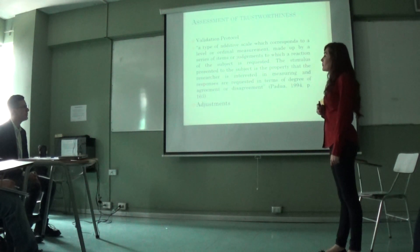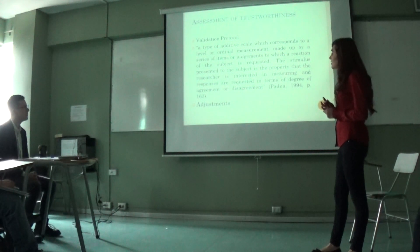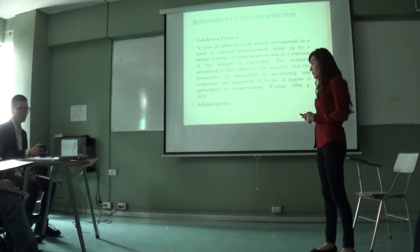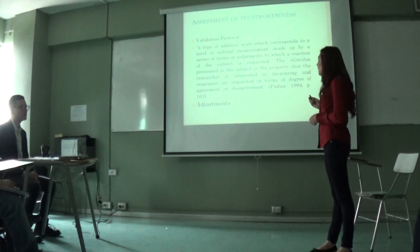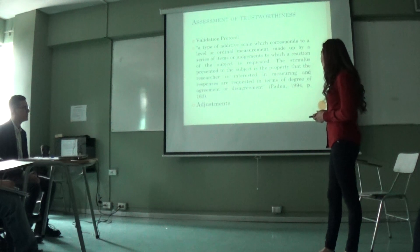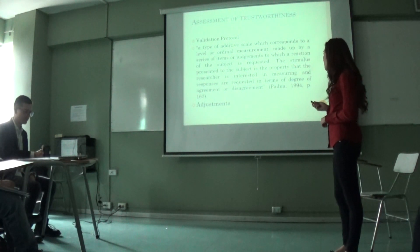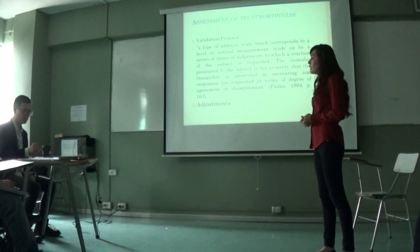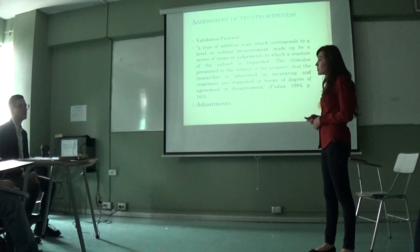Regarding the assessment of trustworthiness, in order to gather reliable information, these instruments went through a validation protocol in which the instruments were sent to three experts who had to score each question according to the Likert scale. The Likert scale is a type of additive scale which corresponds to a level of ordinary measurement made up by a series of items or judgments to which a reaction of the subject is requested. The adjustments of the instruments led to the students' questionnaire, which was initially compiled by six questions.